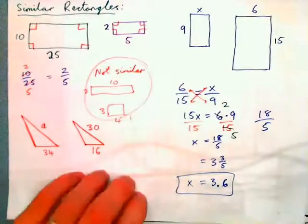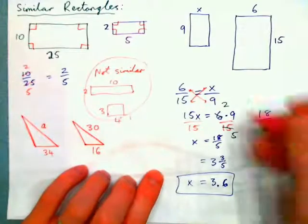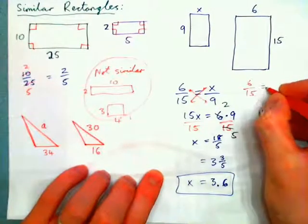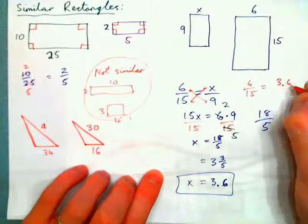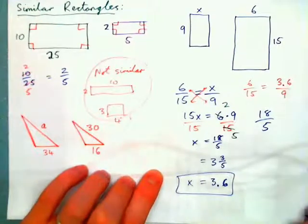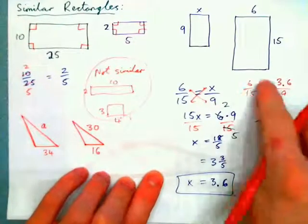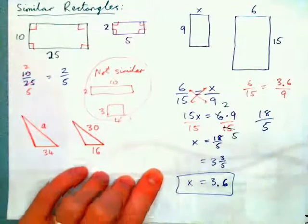We can check our answer: 6 over 15 should equal 3.6 over 9. Just plug both into a calculator and they should give you the same thing.